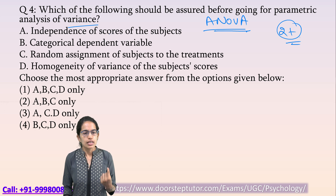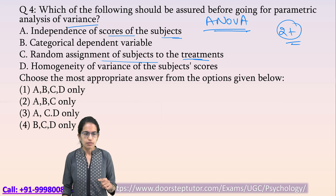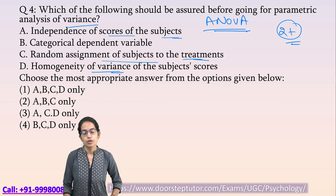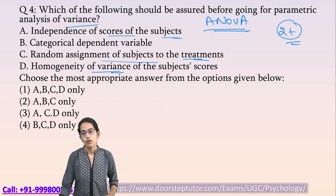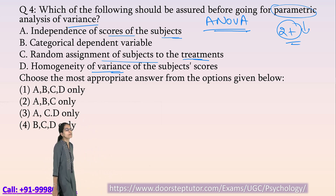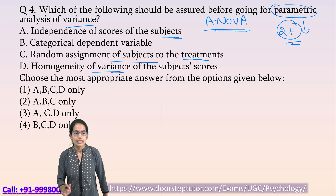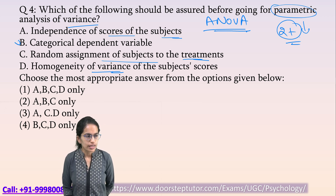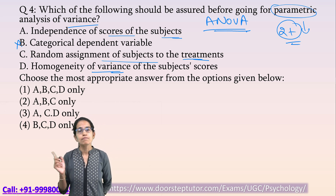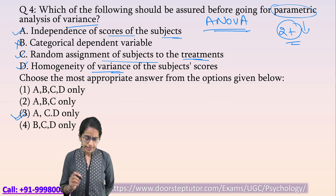Since ANOVA is parametric, the independence of scores should be assessed. There would be random assignment of subjects to treatment, and variance must be homogenous because parametric studies assume a normal distribution — so homogeneity of variance has to be maintained. The data is not categorical; categorical data would go into a non-parametric test. So B, C, A, C, and D are the correct options.